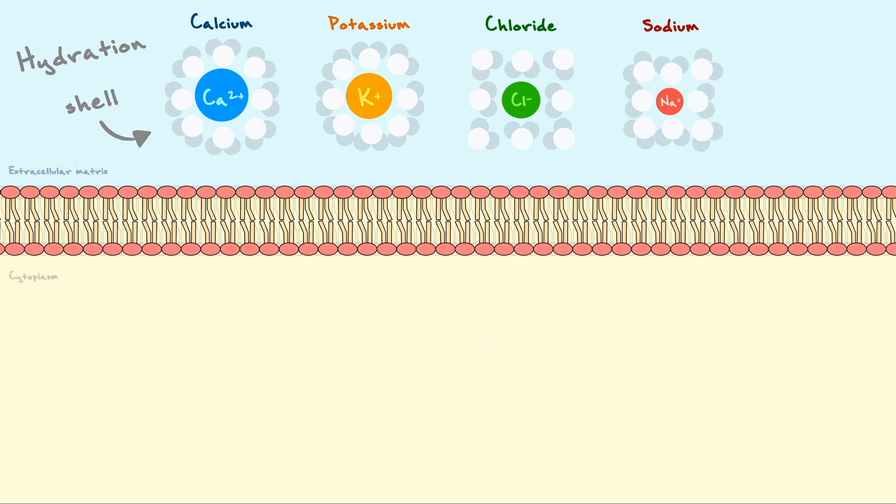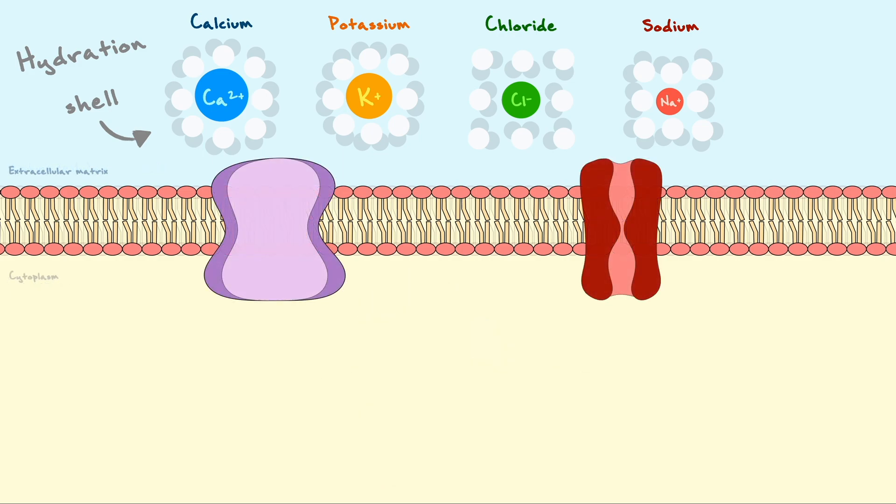To cross the membrane, ions go through particular proteins that are embedded in the membrane. Many different classes of these proteins exist, but for our discussion today, we will cover ion transporters and ion channels.